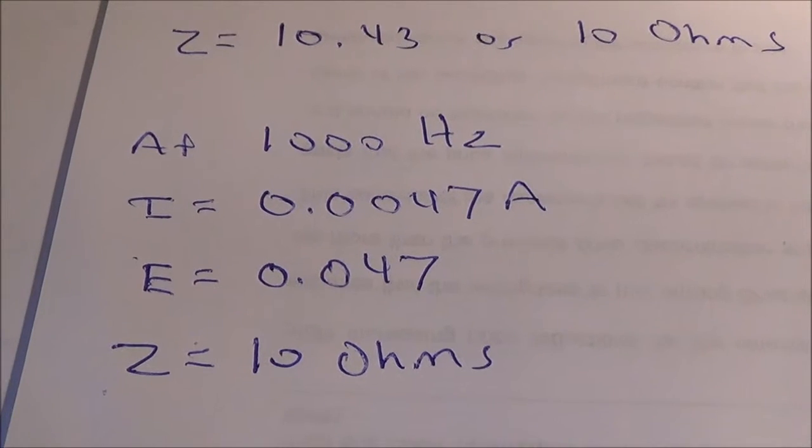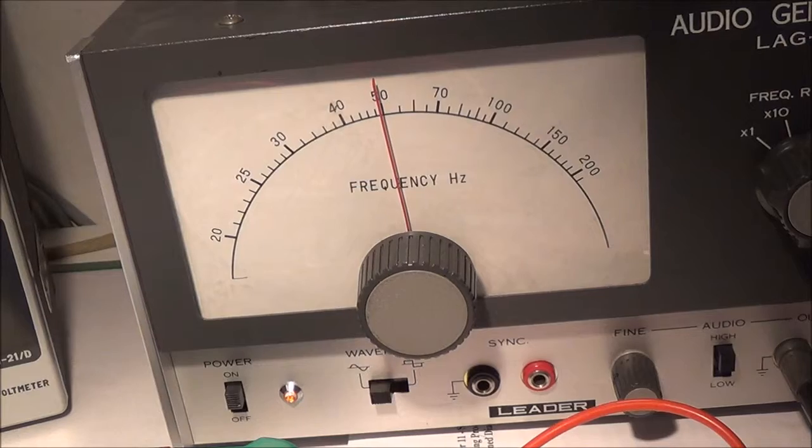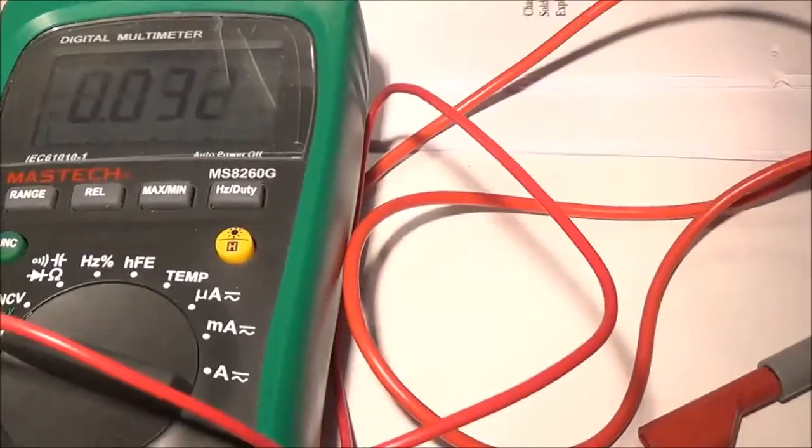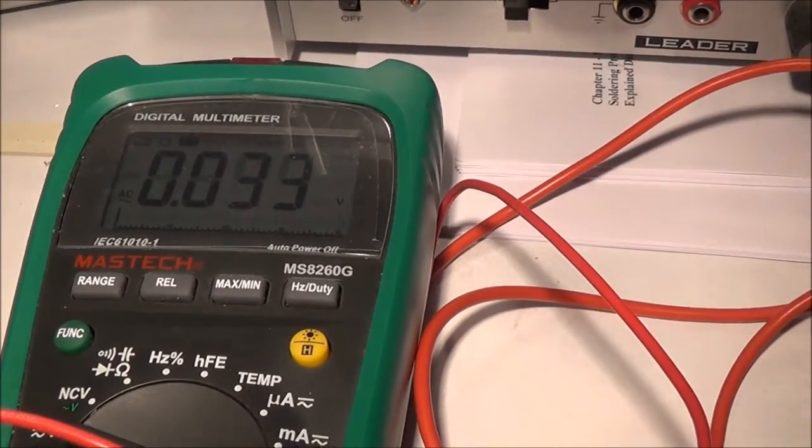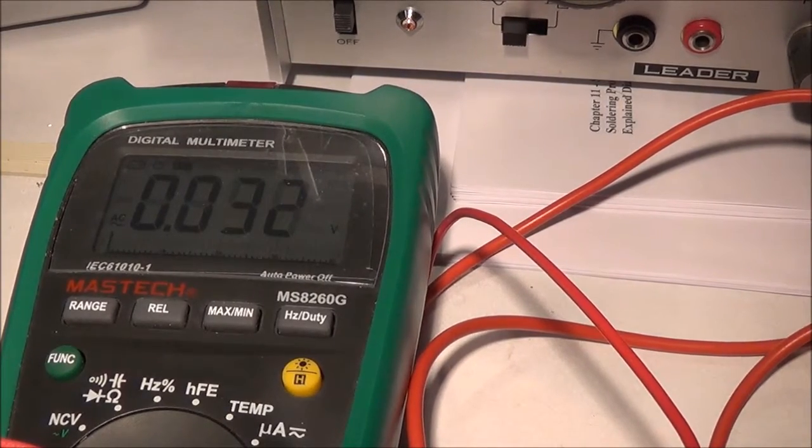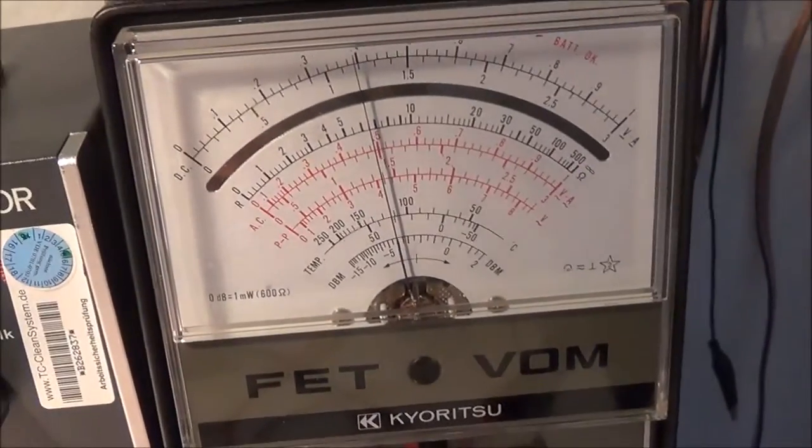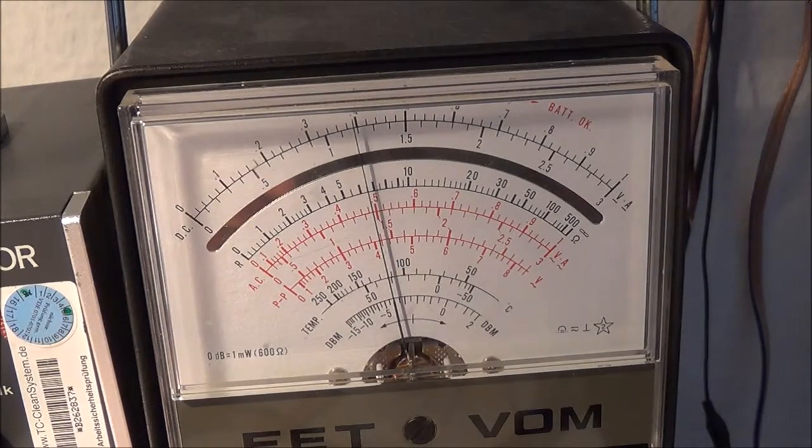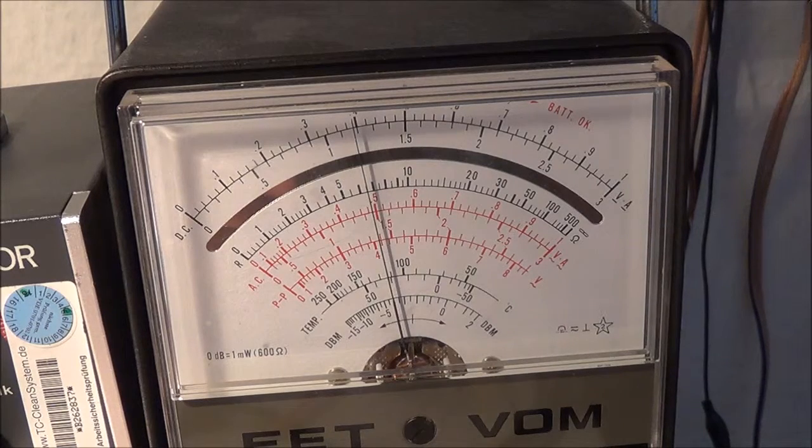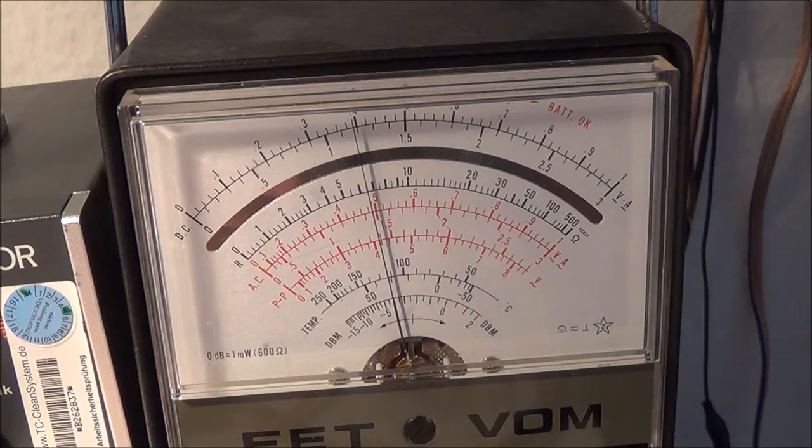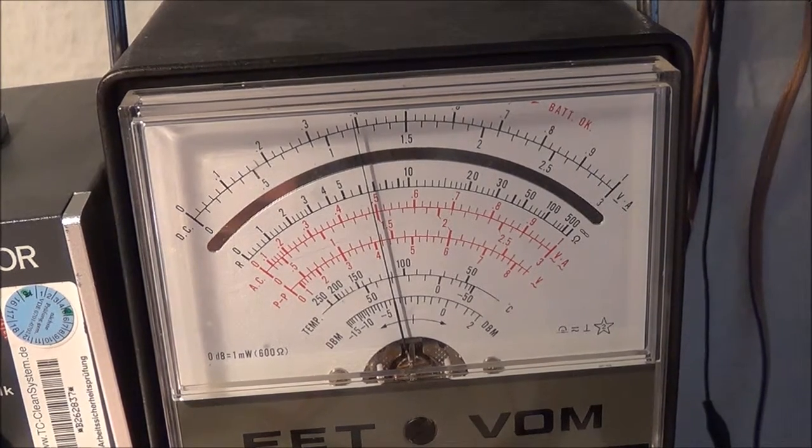My audio generator is now putting out 5000 Hz. As far as voltage is concerned, it looks like I have 33 millivolts or 0.033 AC volts. For the AC amperes, it looks like 4.9 milliamperes or 0.0049 amperes. Looks like that went up.